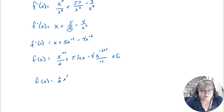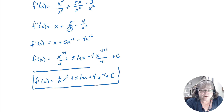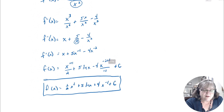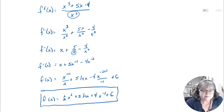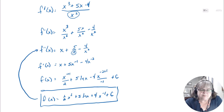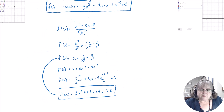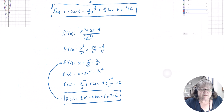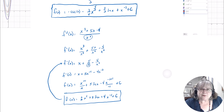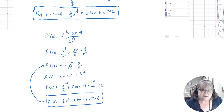Now applying the anti-derivative to x + 5x^(-1) - 4x^(-2): x → x²/2, 5x^(-1) → 5·ln|x| (can't divide by zero), -4x^(-2) → -4x^(-1)/(-1) = 4x^(-1). So f(x) = (1/2)x² + 5·ln|x| + 4x^(-1) + C. Before turning it in, take the derivative to confirm you get back to the original expression.